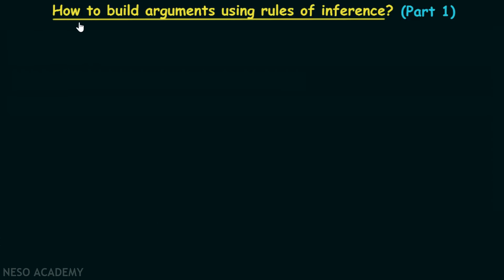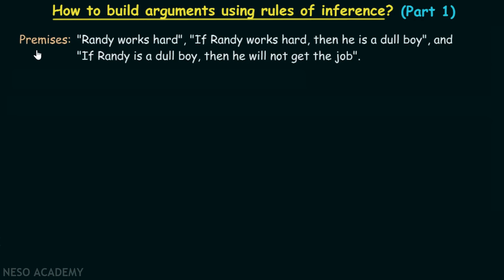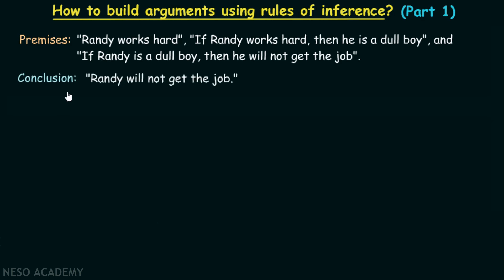In this lecture, we will learn how to build arguments using rules of inference. Let's consider the premises: Randy works hard; if Randy works hard then he is a dull boy; and if Randy is a dull boy, then he will not get the job. From these premises, we need to conclude that Randy will not get the job.